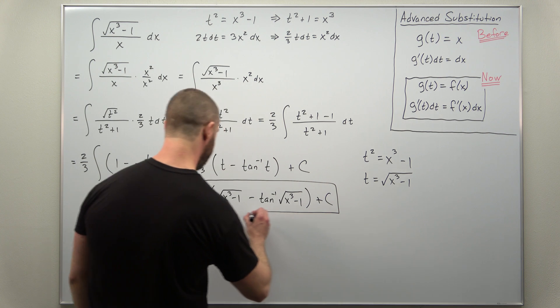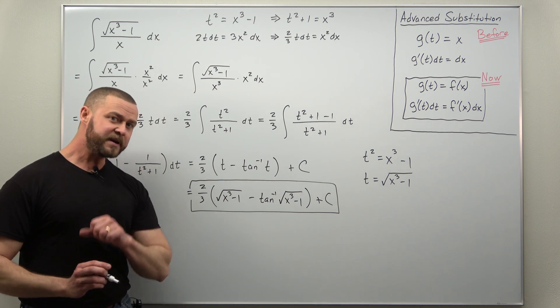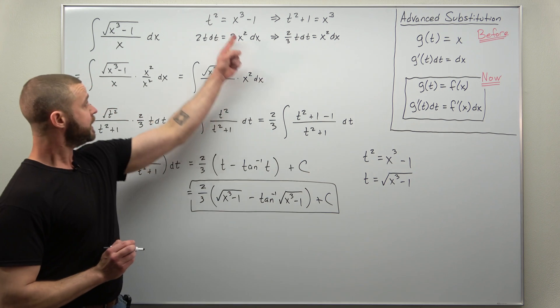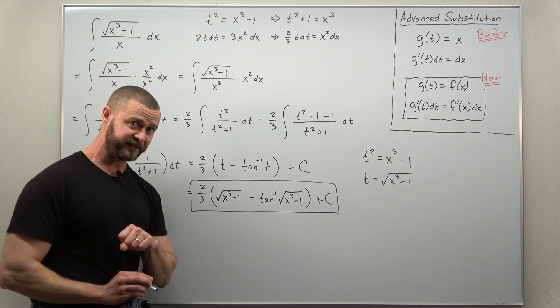And there we have it. We have our antiderivative using a combination of techniques. First, an advanced substitution of the form a function of x equals a function of t.